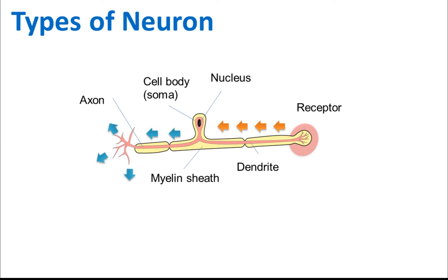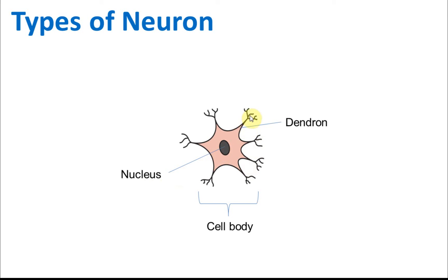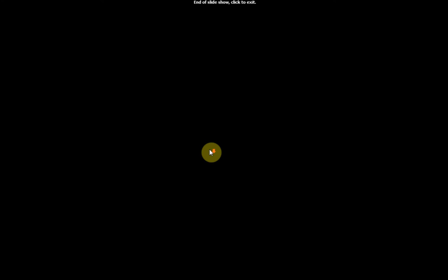The last type is called the relay neuron, also known as the interneuron. It has a very large cell body with a nucleus. It has dendrons that receive impulses from all its branches, and some branches are axons that send impulses out. For relay neurons, the distinction between dendrite and axon is not very clear. Make sure you remember all the names and functions of the neuron parts.